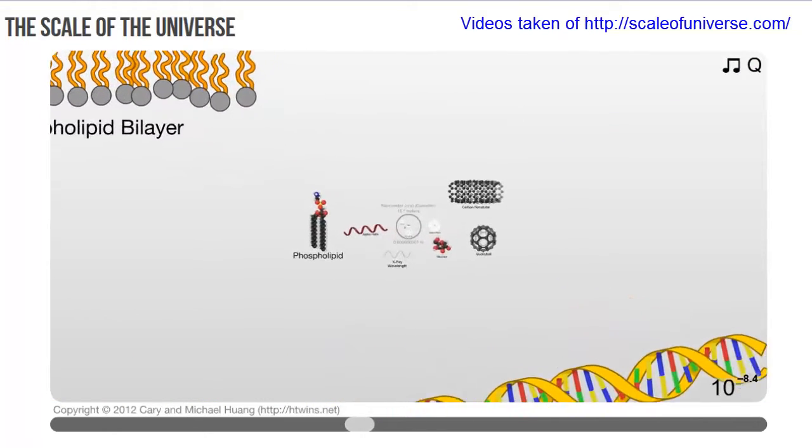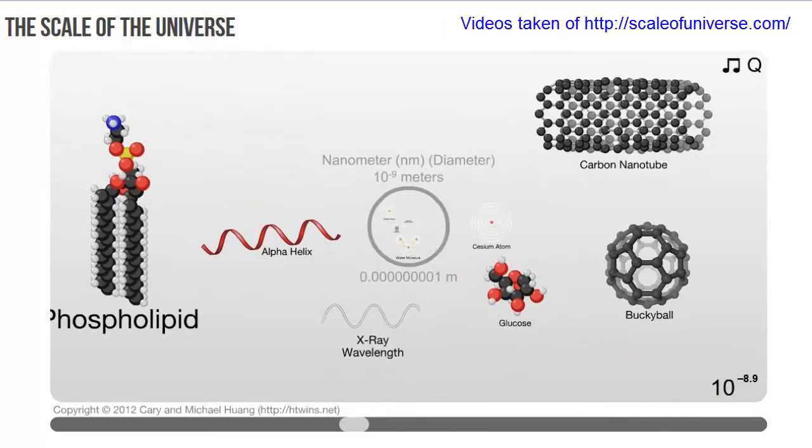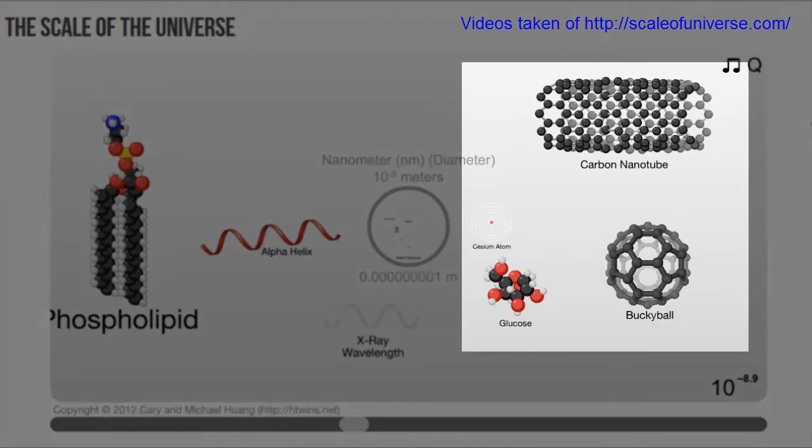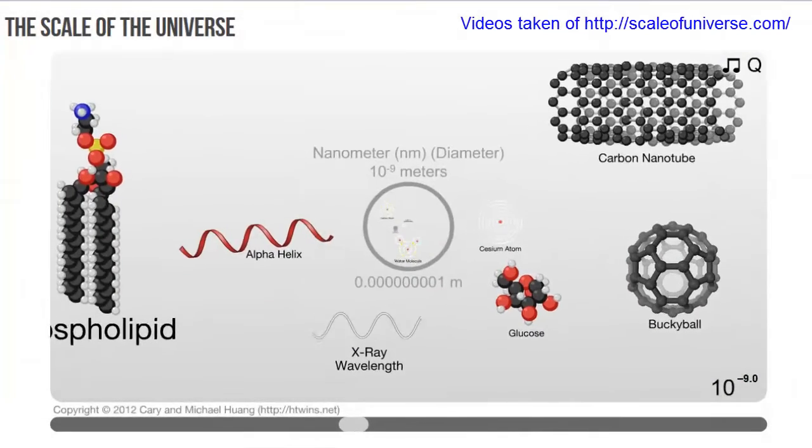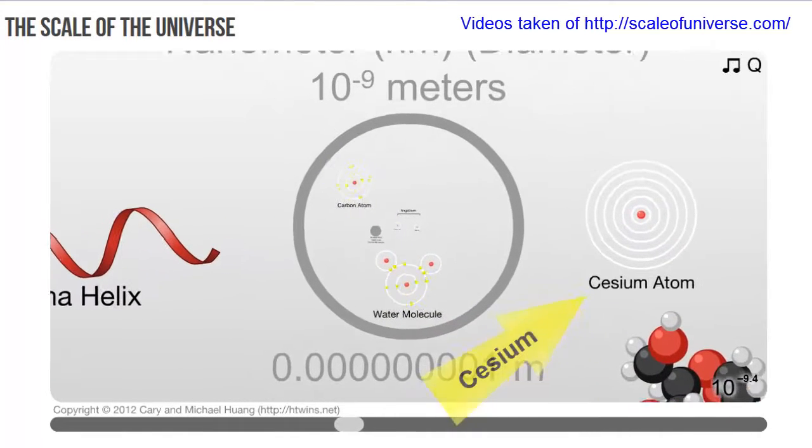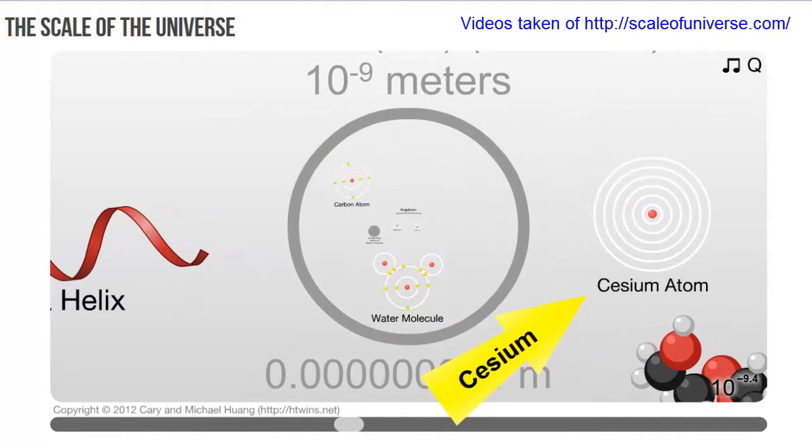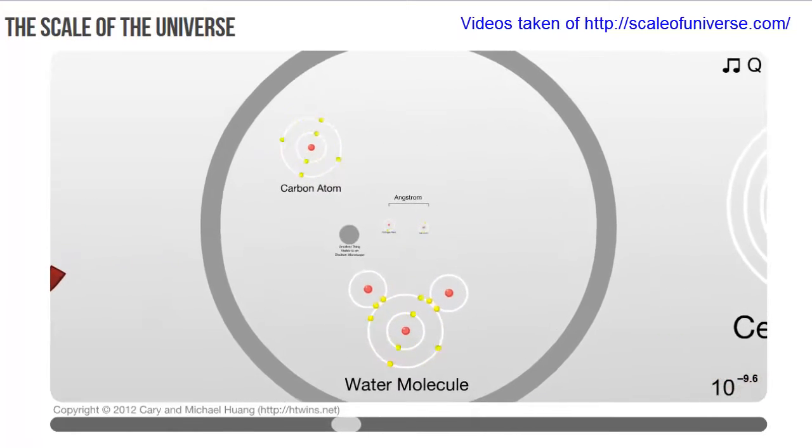Zooming in further, we see smaller molecules such as glucose, buckyball, or a carbon nanotube. Zooming in even further, we can see cesium, which is the largest non-radioactive element, and an individual water molecule made of a single oxygen atom bound to two hydrogen atoms.